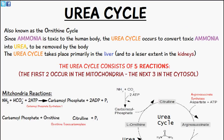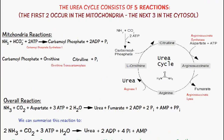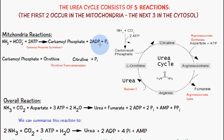The urea cycle consists of five reactions. The first two occur in the mitochondria and the next three occur in the cytosol. The first mitochondrial reaction takes ammonia with a carbonate ion and two ATP to form carbamoyl phosphate, two ADP, and one inorganic phosphate. The enzyme catalyzing this reaction is carbamoyl phosphate synthetase 1, or CPS1.